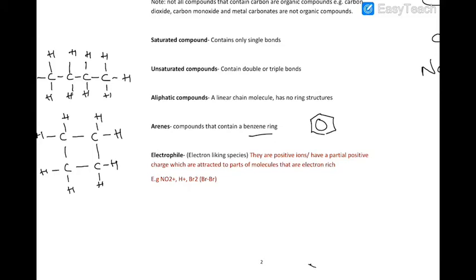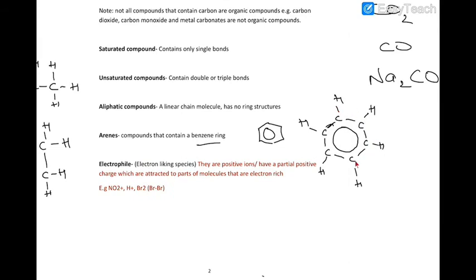So benzene ring looks like this. So you have six carbon atoms. We'll look into more details about the benzene ring, but basically this is what the benzene ring looks like, where you have six carbon atoms joined to each other, and then you have one hydrogen to each. And then in the middle you have delocalization of electrons. We'll see that in more details. So whenever you have something that is attached to the benzene ring, so here, this is an arene.